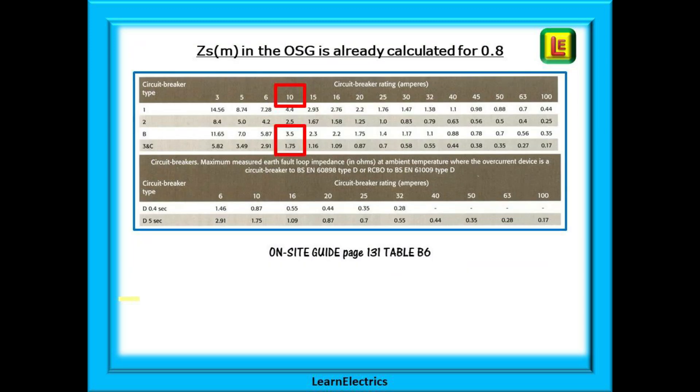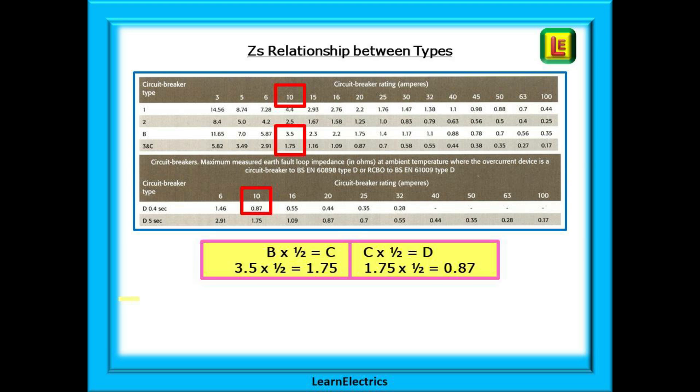Or we can refer to the on-site guide table B6 where all the calculations have already been done for us. The on-site guide shows what we should measure as a maximum with our test meter for each type and rating of MCB. Notice that the C type maximum is half the B type maximum and the D type is half the C type. A useful thing to remember.